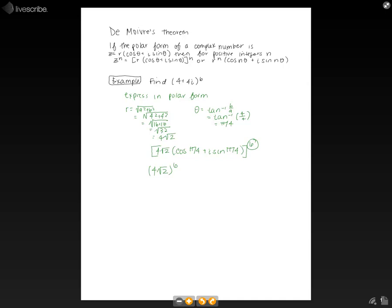Times cosine n times theta, so 6 times pi over 4, plus i times sine n theta, so 6 times pi over 4.